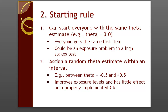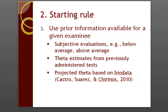The next component is a starting rule. The simplest approach is to start everybody with the same theta estimate — that is, 0.0. In this case, everybody will get the same item, which could be an exposure problem in high-stakes testing, but if you're working with a low-stakes assessment, it might not be an issue. A second approach is to assign a random theta estimate within an interval, such as from minus 0.5 to plus 0.5. This will improve the exposure levels of the items but has little effect on a properly implemented CAT overall. A third approach is to use prior information available for a given examinee, including subjective evaluations perhaps by a teacher, theta estimates from previously administered tests, or projected theta based upon biographical or other incoming data.